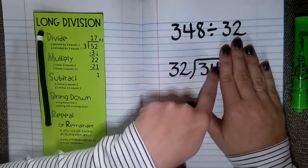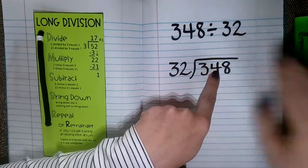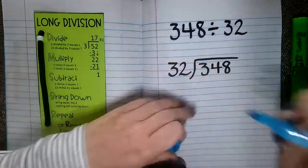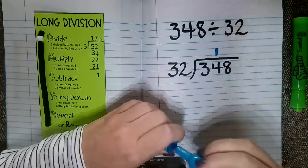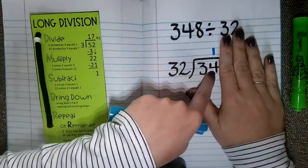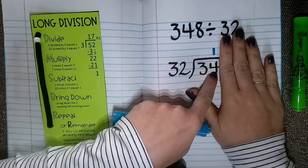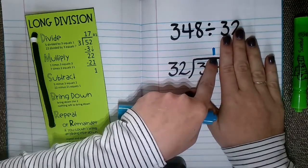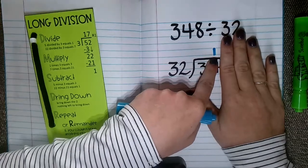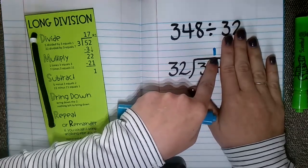So 32 fits into 34 one whole time. And like I said before, I'm going to write that one right above my 4. This 4 is in my tens place. So we just found out what digit is going to be in our tens place in our quotient, in our answer.